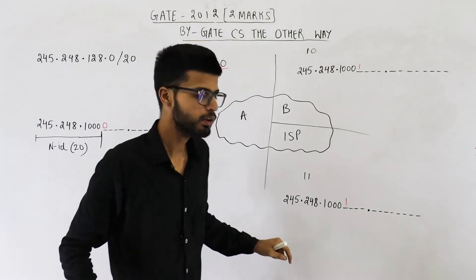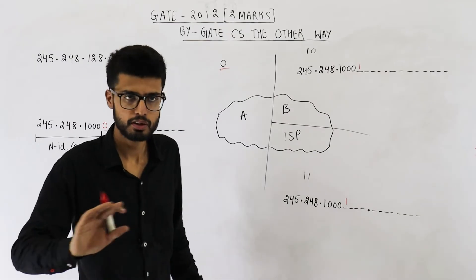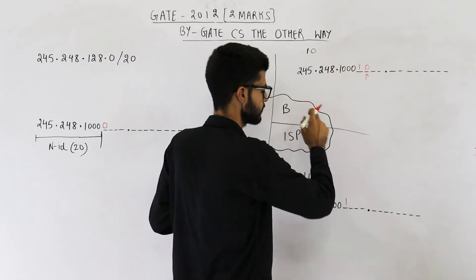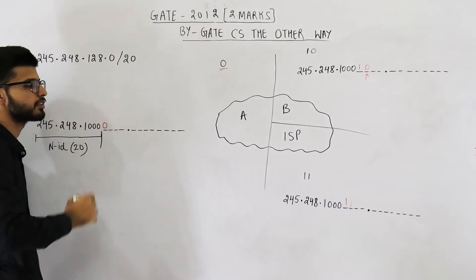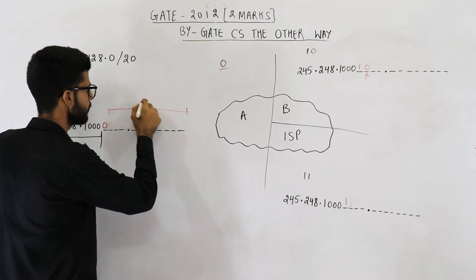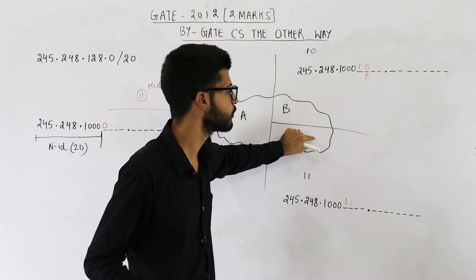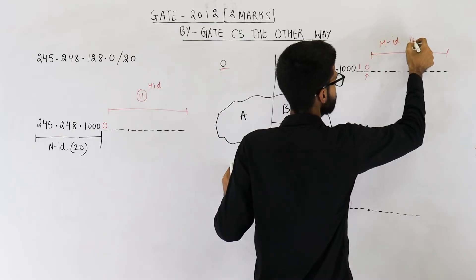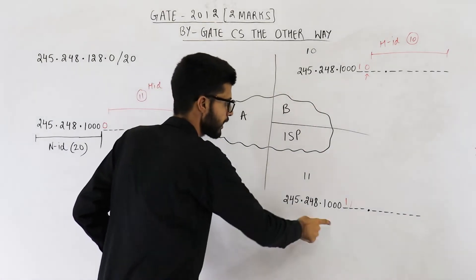But if this bit is one, we cannot distinguish which of the two remaining subnets it is. For that purpose, we fix one more bit. If it is zero, it is one subnet; if it is one, it is the other subnet. So if the first bit is zero, the host ID is 11 bits; if it is one, we analyze one more bit and the host ID becomes 10 bits.